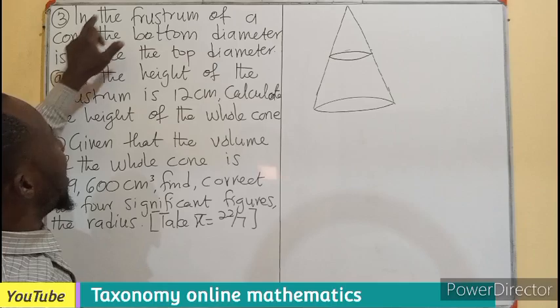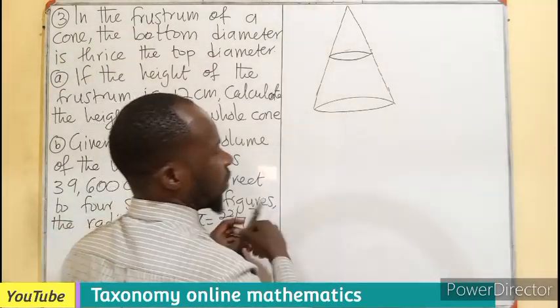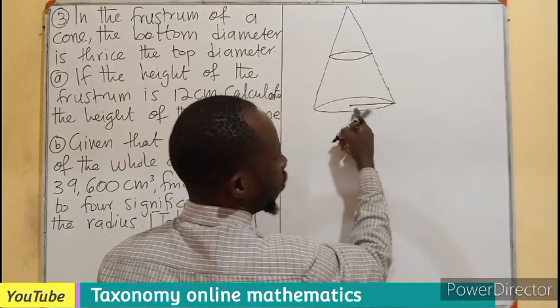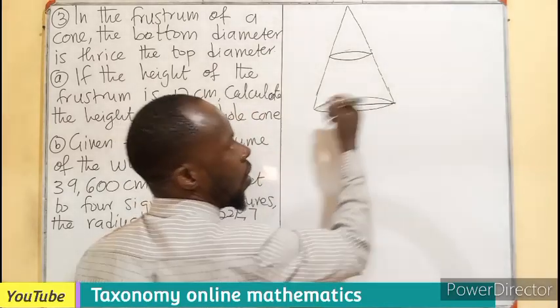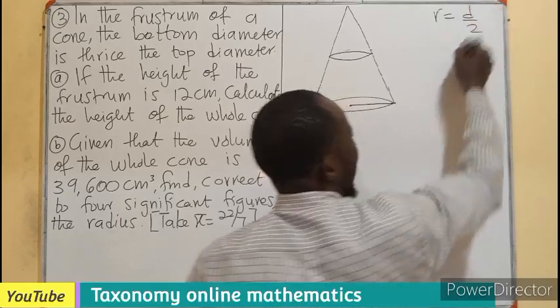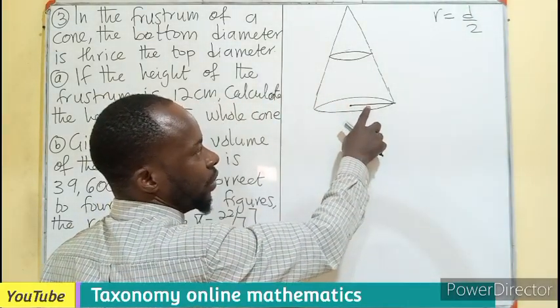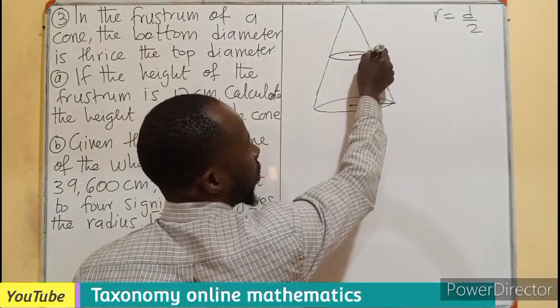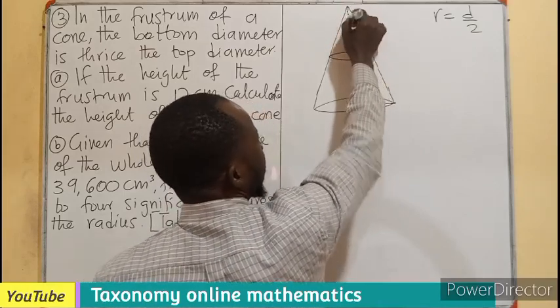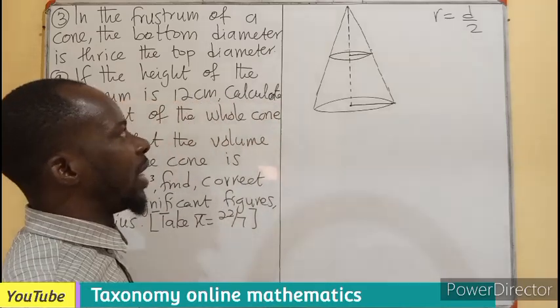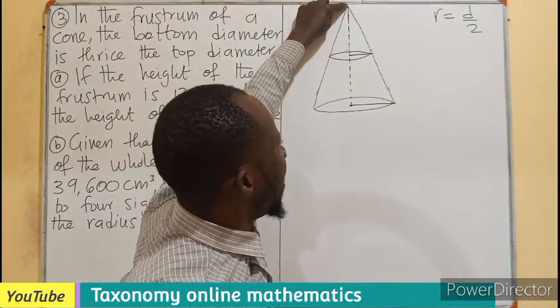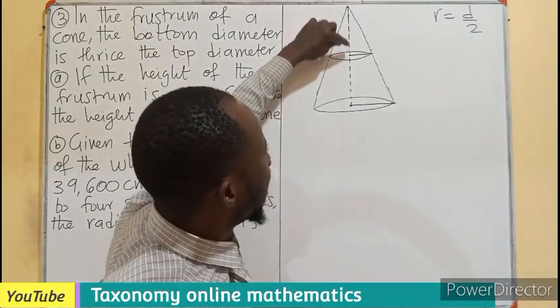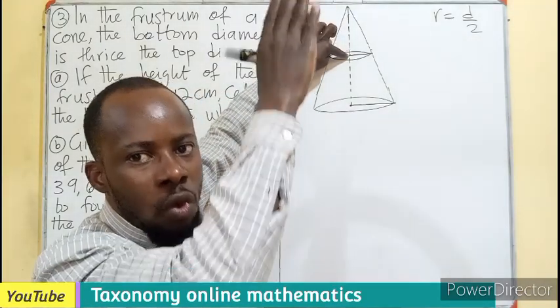The question is saying that in the frustum of a cone, the bottom diameter is here. This is going to be the center. Let's make a line to get a radius - from here to here will be a diameter. We know that radius equals diameter over 2, meaning this area here is going to be diameter over 2. Now if I draw this line, we can see that all the way from the apex down to the bottom is the height of the cone, the original cone.